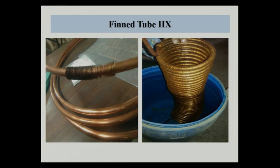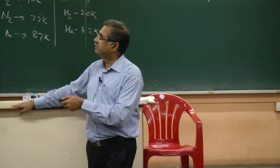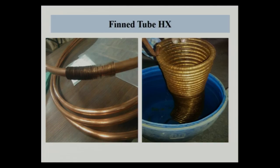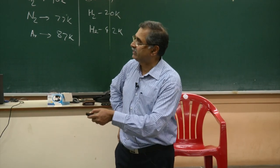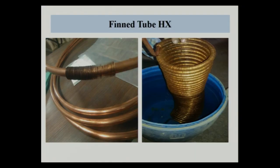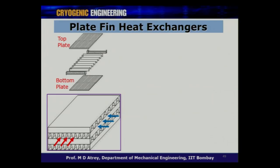The coiled fin-tube heat exchanger — used in Collins-type helium liquefiers — has finned tubes wound helically around a mandrel. One gas goes inside the tube, the other flows over the fins. With around 24 fins per inch (one fin per millimeter), this achieves high compactness. Multiple layers can be wound to increase heat transfer area. We have been making such heat exchangers at IIT on small copper tubes of around 12 mm diameter.